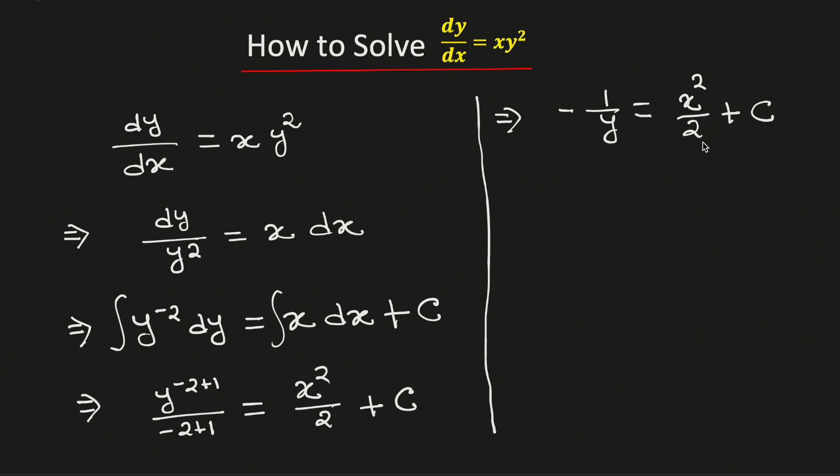Now if we simplify the right hand side, we will get minus 1 over y is equal to x² plus 2c divided by 2.